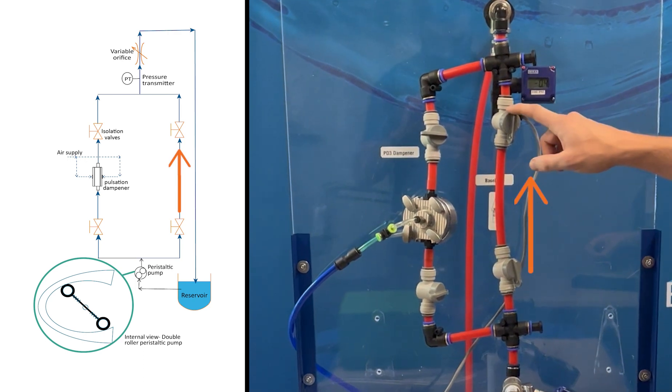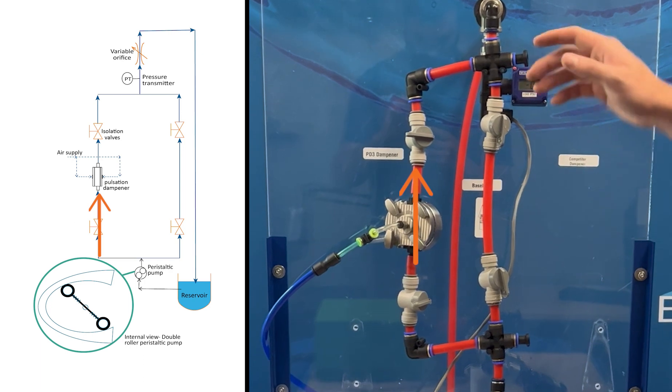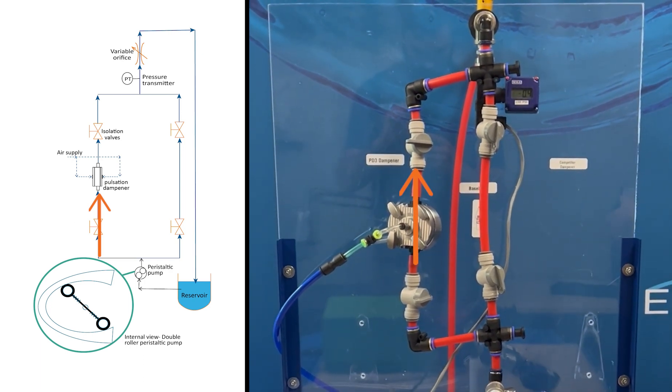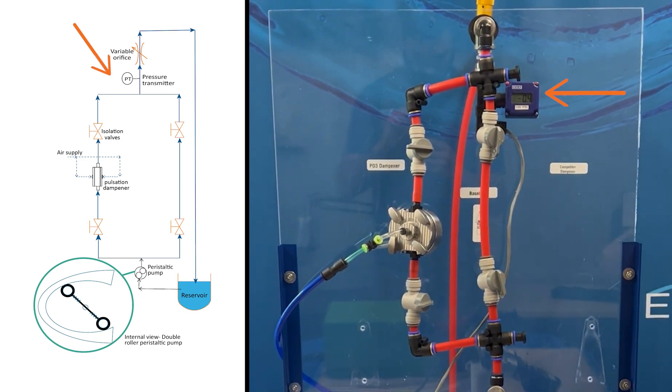We'll study a base case which will show the pressure from the pump and then we'll move to a dampened case where we'll study how the Equilibar dampens that pulsation. We'll measure pressure just before a restriction and plot it on the computer.